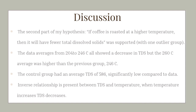The data averages from 204 to 246 degrees Celsius all show a decrease in total dissolved solids. But the 260 degrees Celsius average was higher than the previous group of 246 degrees Celsius. The control group had an average total dissolved solids significantly low compared to all of the other data, at 586. The inverse relationship between total dissolved solids and temperature is exemplified, because as temperature increases, total dissolved solid levels decrease.